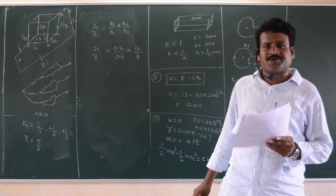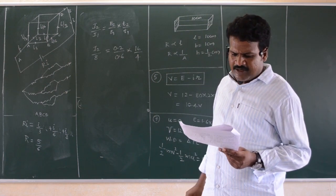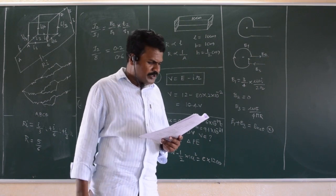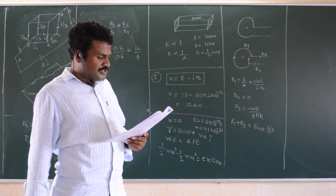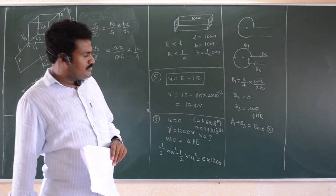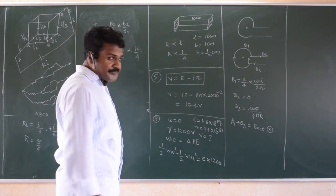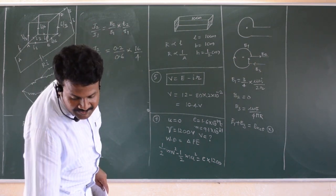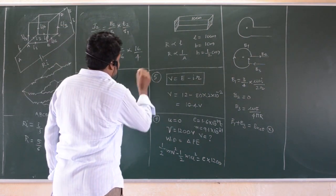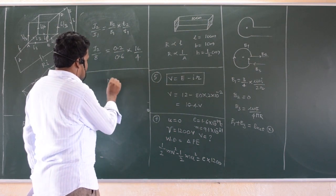Question number 15 is a direct question from the NCERT example. There is a long cylindrical wire of radius arc that carries a uniform current flowing through it. The variation of magnetic field with distance R from the axis of the wire is shown. This is a direct NCERT textbook question in Ampere's circuital law, immediately after which there is one example question about a solid wire.